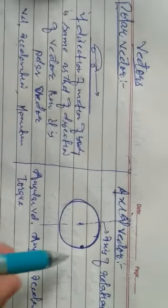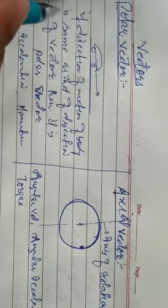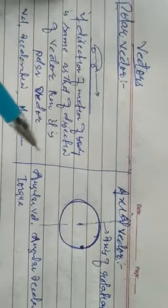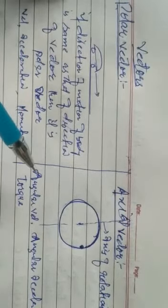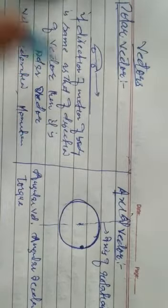So these are the axial vectors and these are the polar vectors. Simply put, a polar vector is the vector whose direction of motion of the body and direction of the vector are both the same.